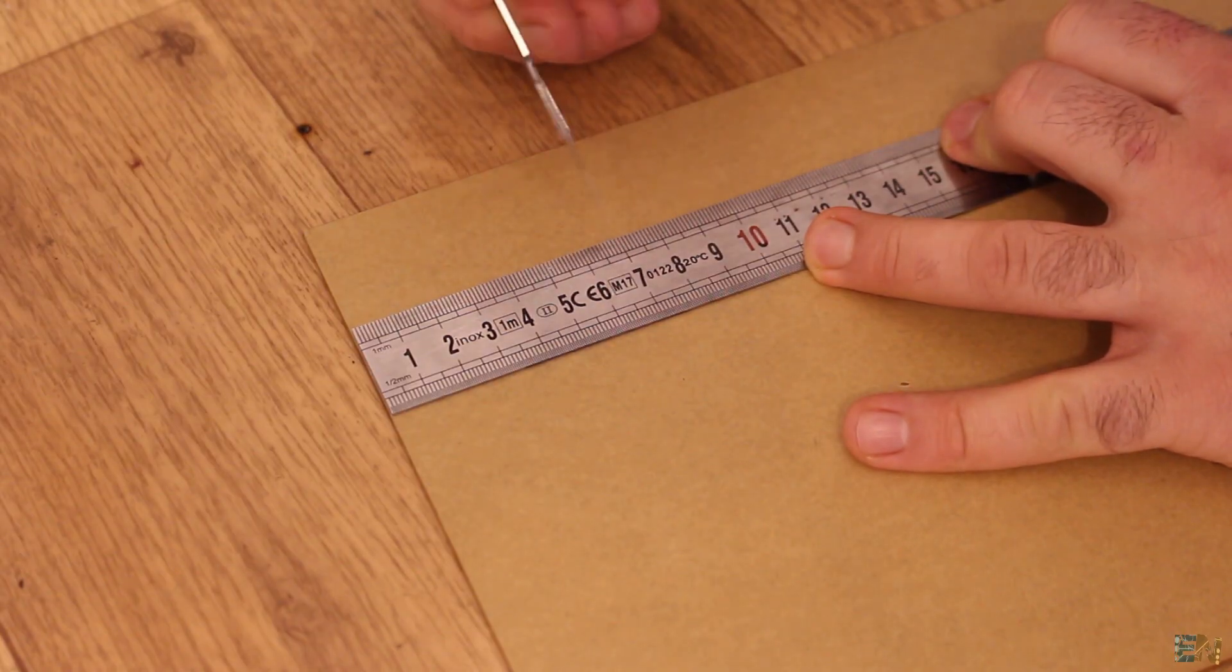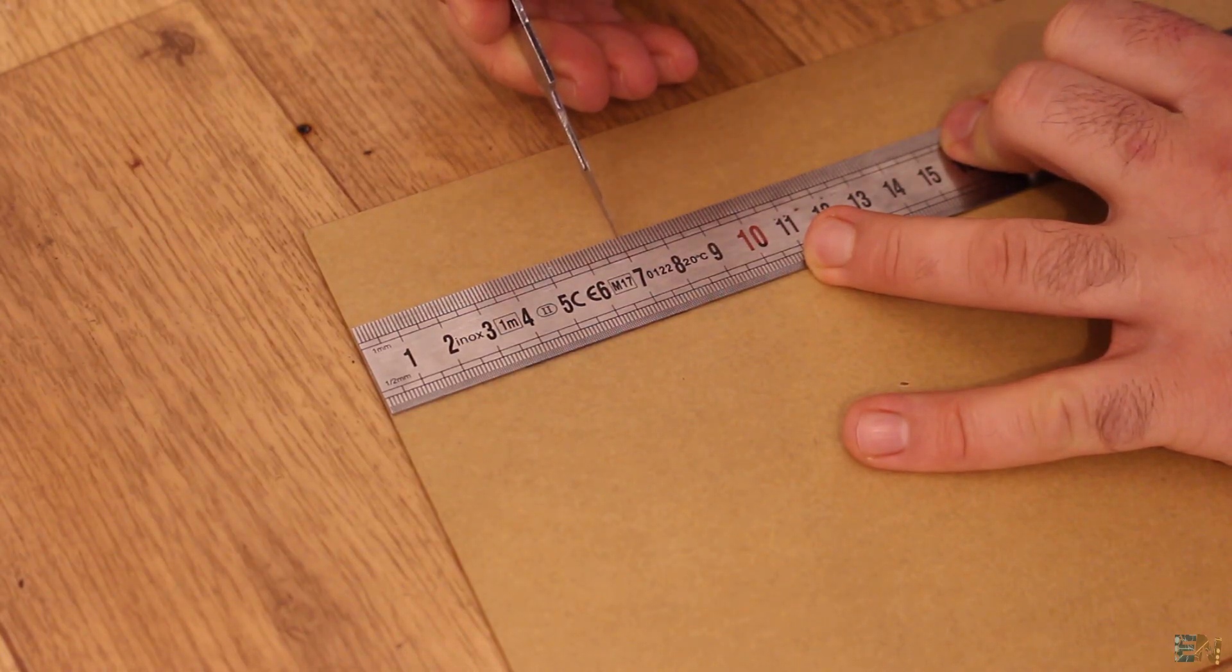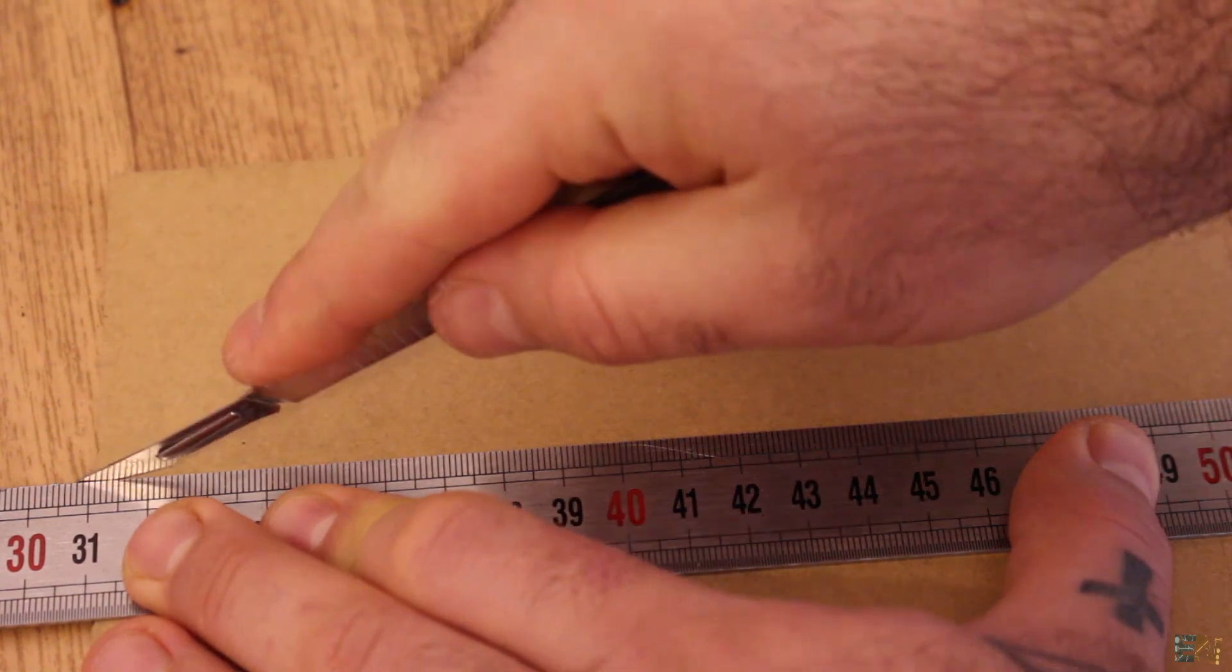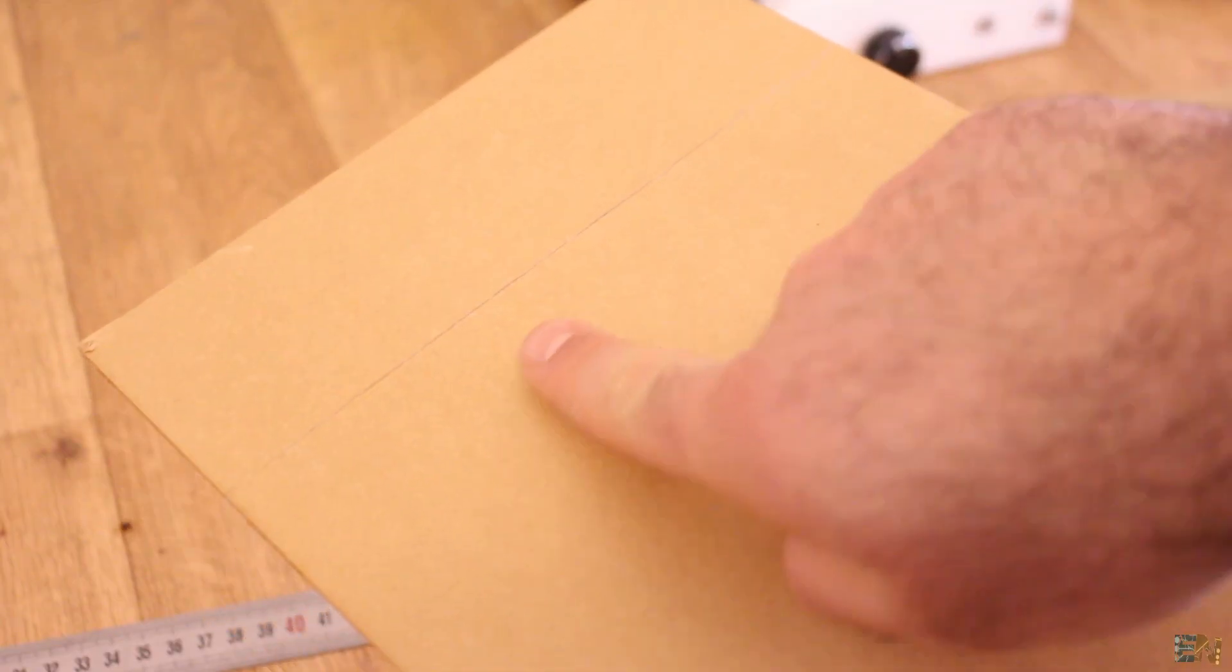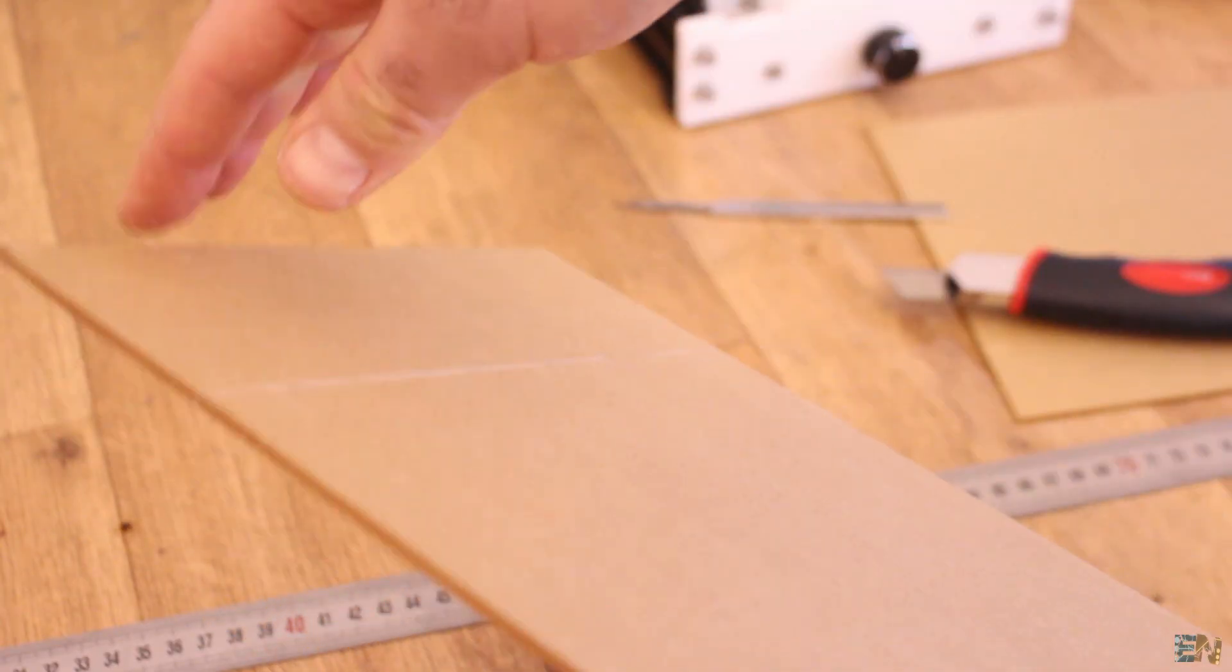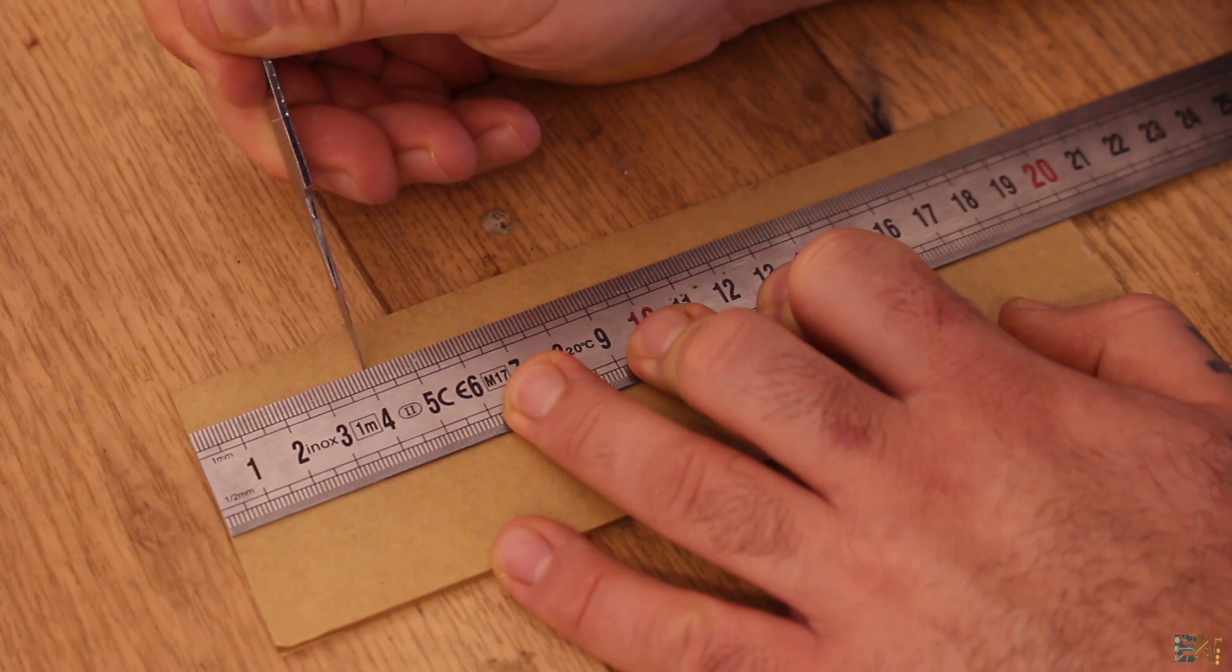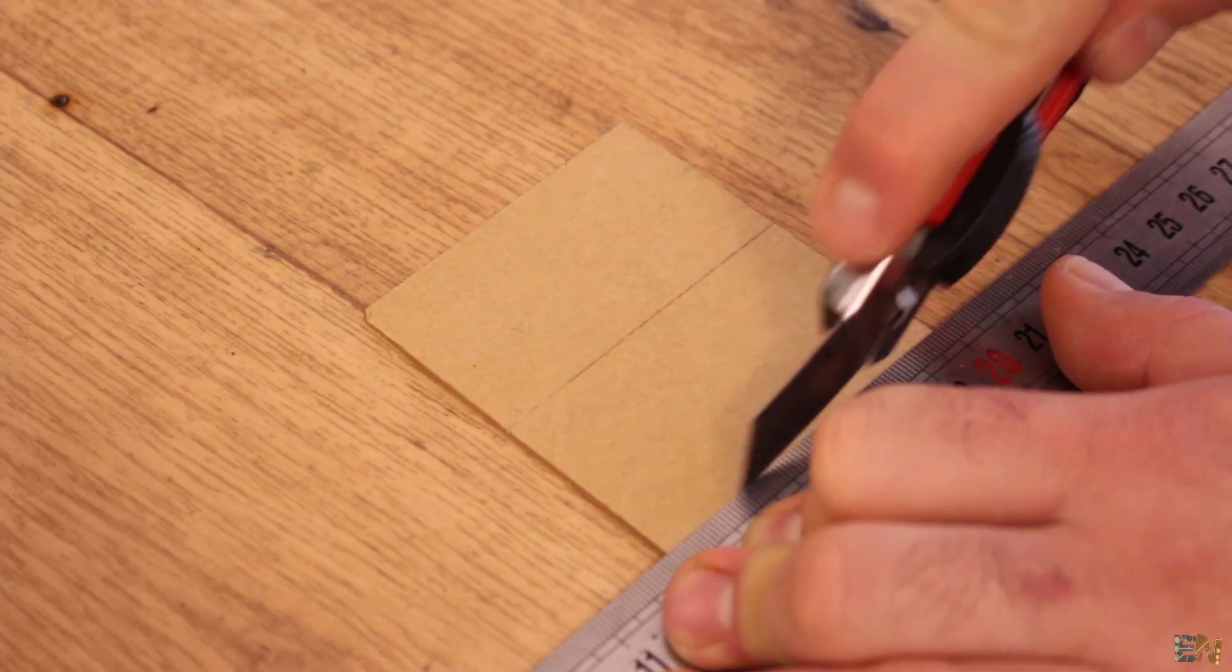If you have a cutting circle or saw, that would be great. I don't have one, so in order to make straight cuts, I'll use a metal rule and a cutter. We mark the lines and then we pass the cutter a few times, till we have a deep enough cut.